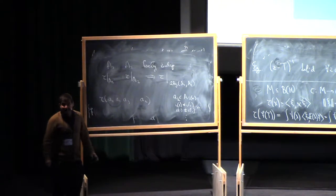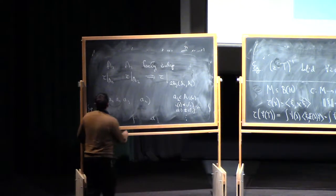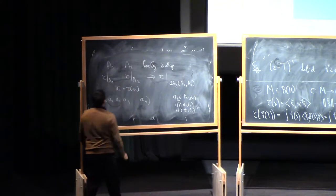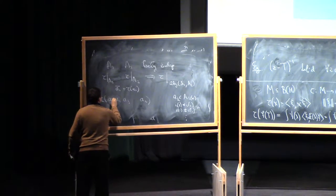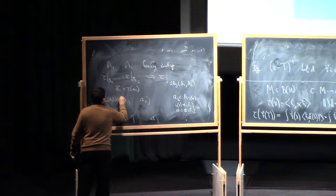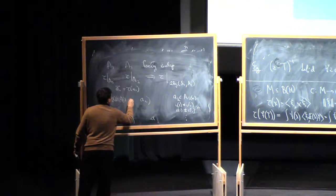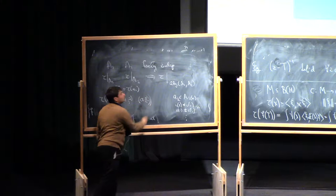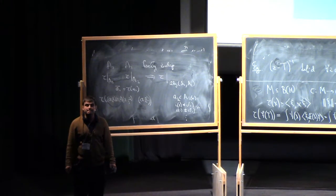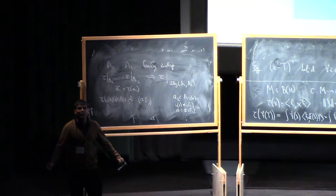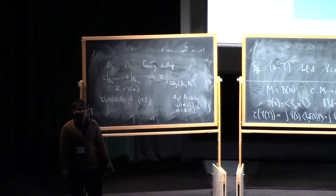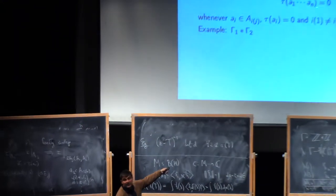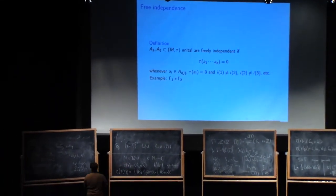And the next trick I'm going to do is I'm going to recenter all of them. So I will write as Ai bar for tau of Ai. So I will look at A1 minus A1 bar, A2 minus A2 bar, A3 minus A3 bar, and An minus An bar. Now what's this equal to? Zero, why? Because of the definition. The definition of free independence is precisely to say that a product like this is zero. So this is zero.